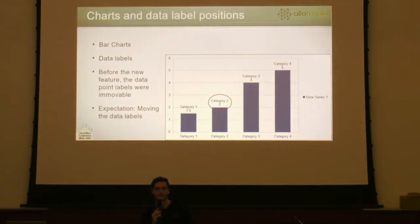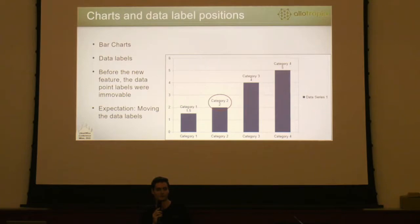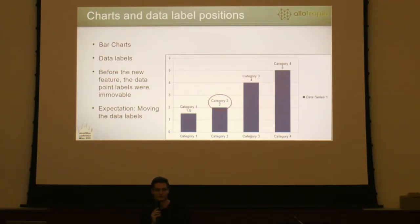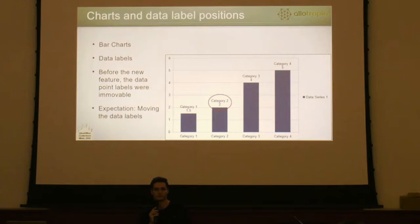This feature was the movable chart data point labels. Earlier, it wasn't possible to move these objects and shapes. It was a shape with predefined fixed positions like top, middle, right, left, and so on. There were some other positions like best fit in case of pie chart. It is possible to move these objects in Microsoft Office, so the expectation was to make the data labels movable also in LibreOffice charts.